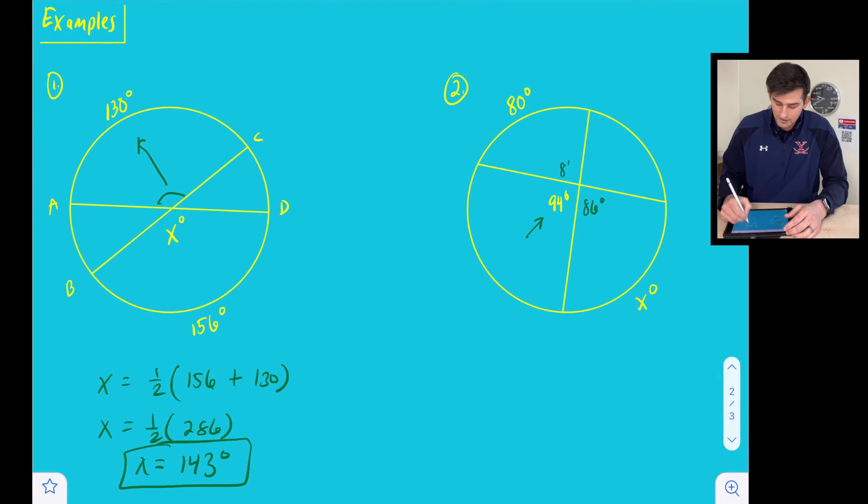So that tells us that these two angles are 86 degrees because they're vertical angles, but really all we need is the fact that one of those angles is 86 degrees. So now we can set up our equation.